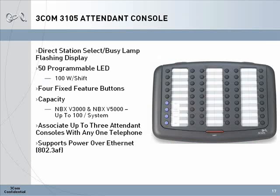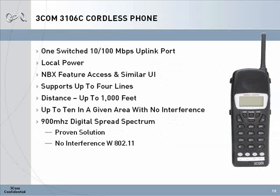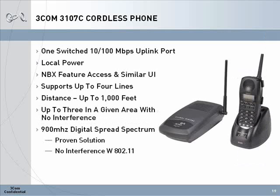The 3105 attendant console has 50 programmable buttons that shift to 100-button functionality. The 3106 cordless phone connects to the network via a single 10/100 Ethernet port and operates on the 900 MHz digital spread spectrum. The phone has its own power supply and does not utilize Power over Ethernet. The range on the 3106 phone is up to 1,000 feet, and there are four programmable buttons on this phone. Up to ten of these 3106 units can be deployed in a given area.